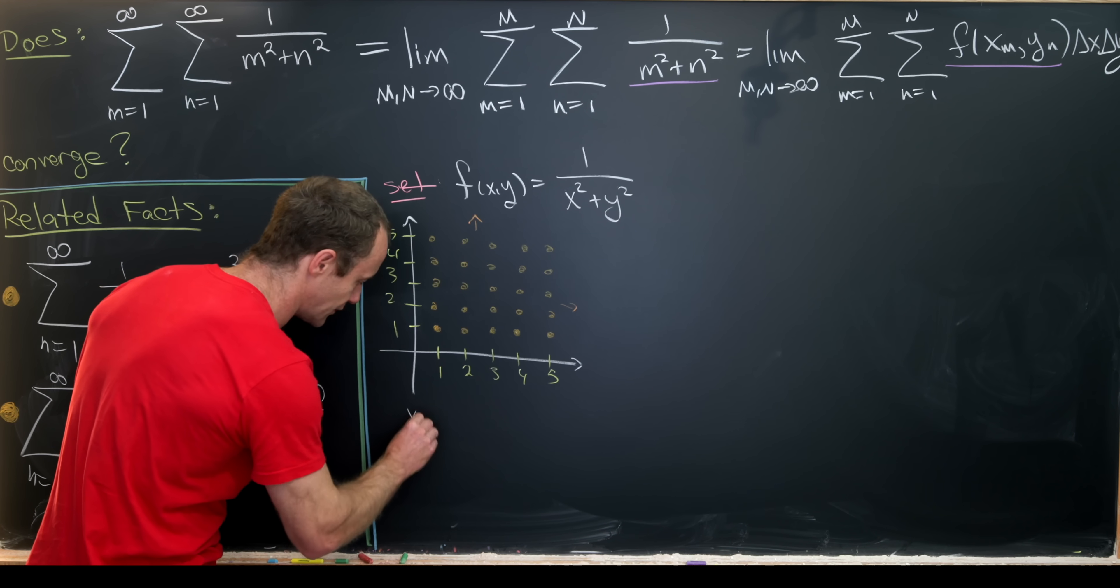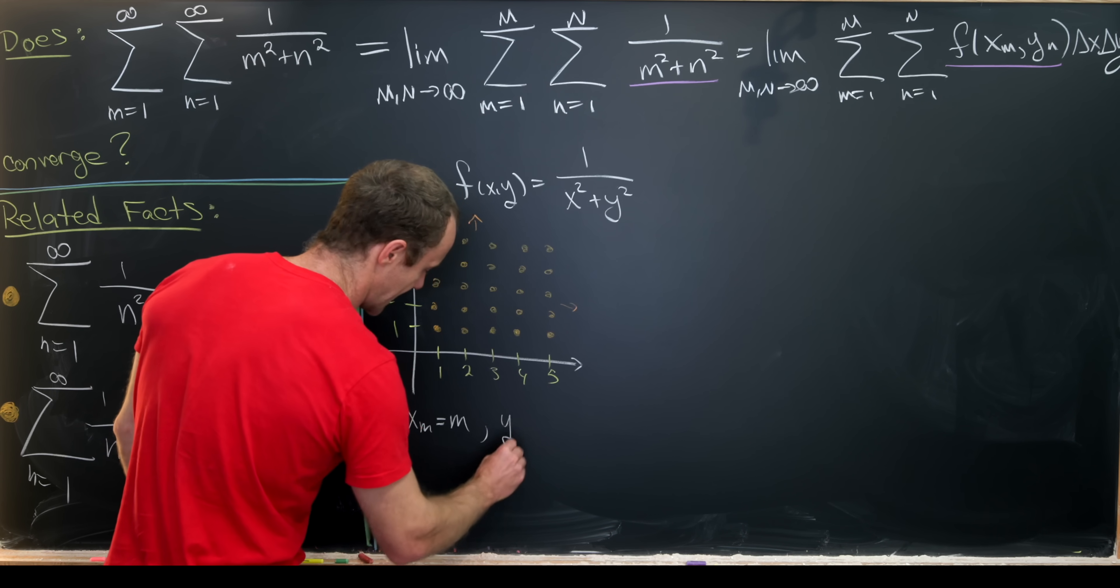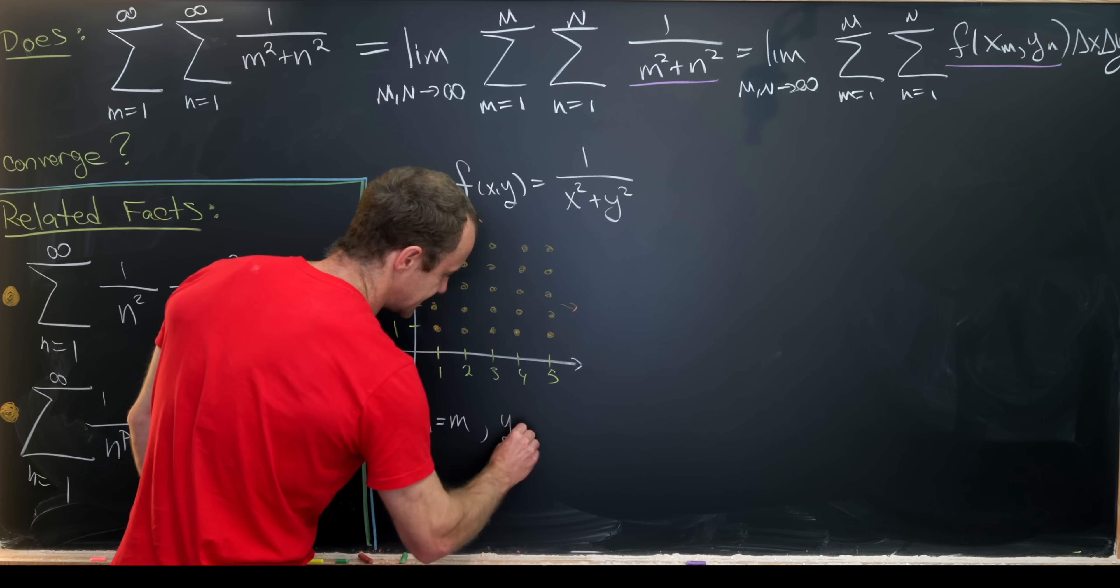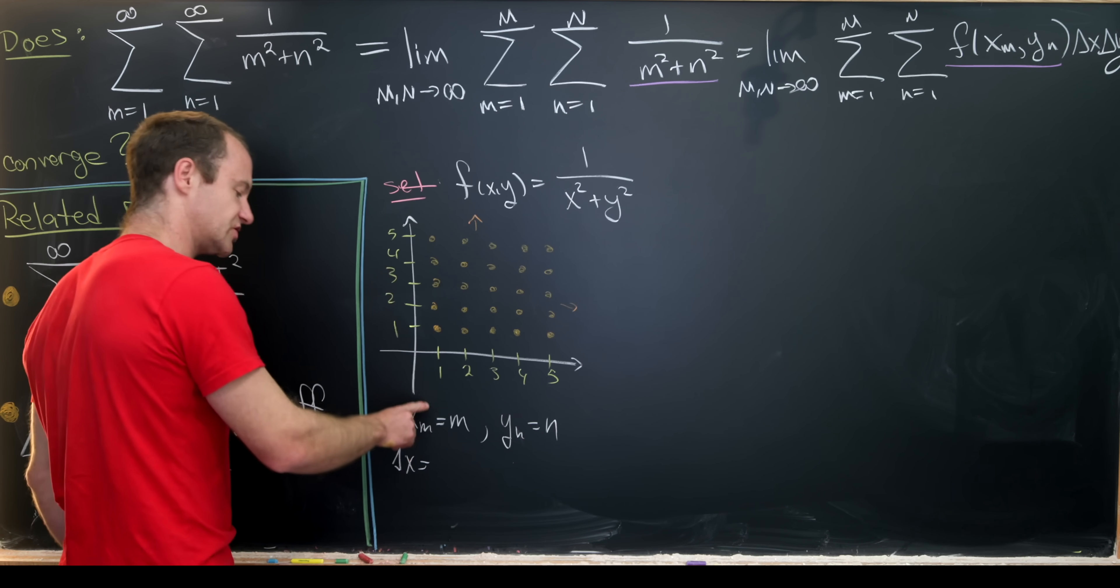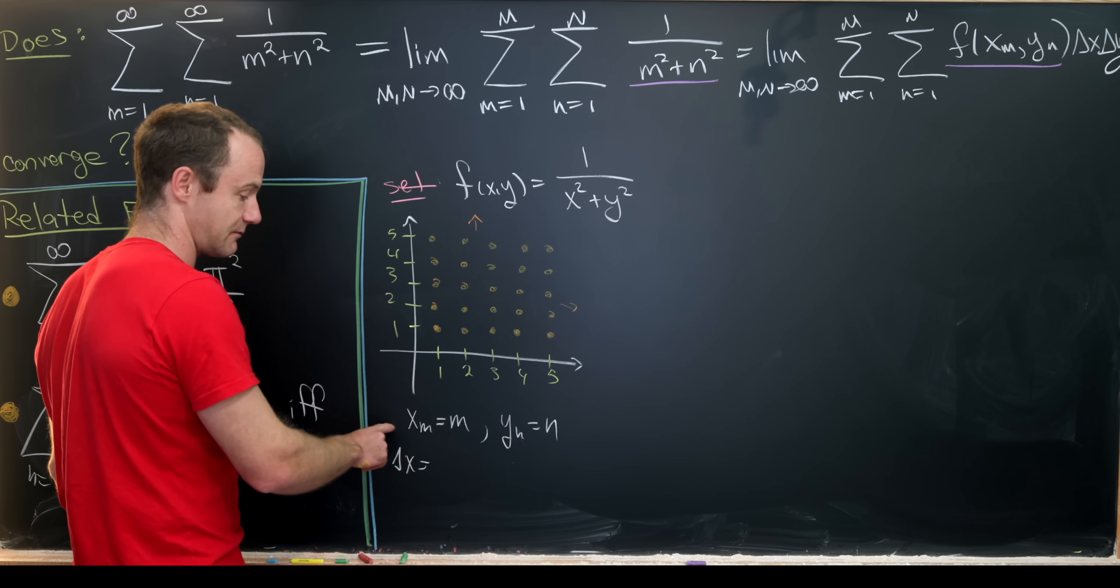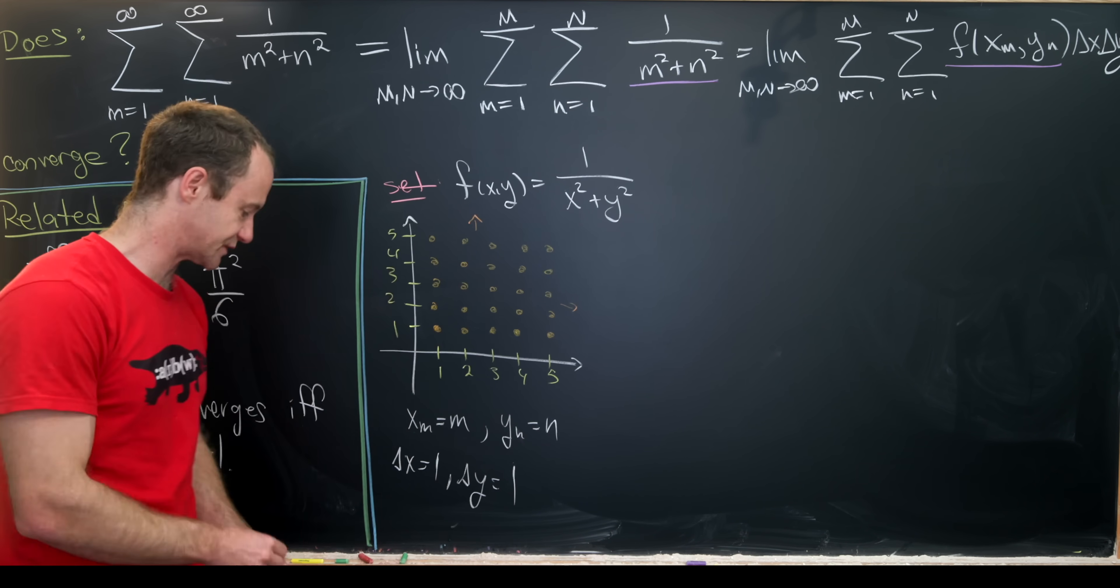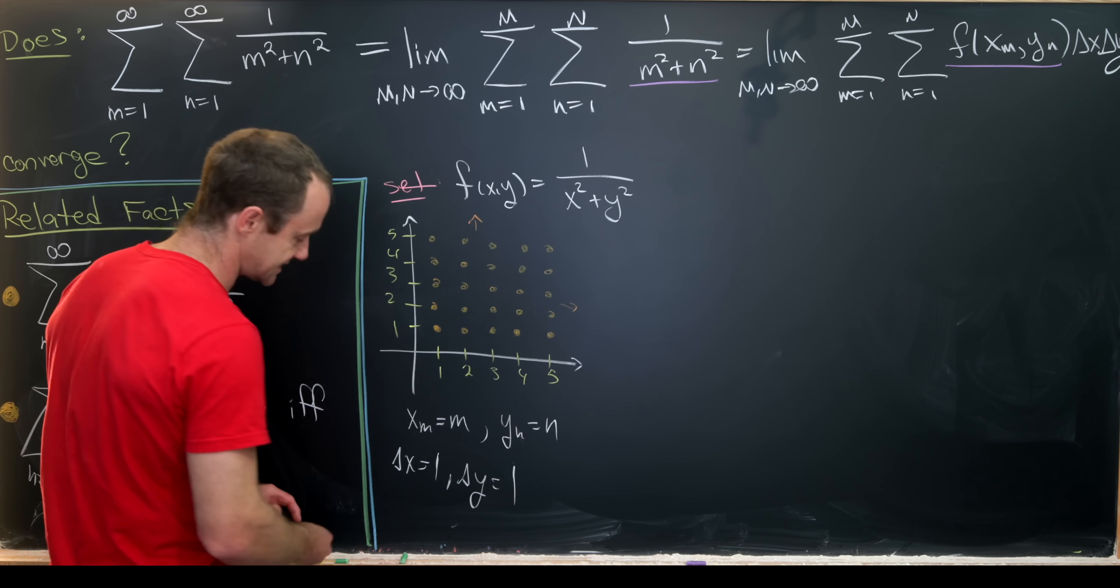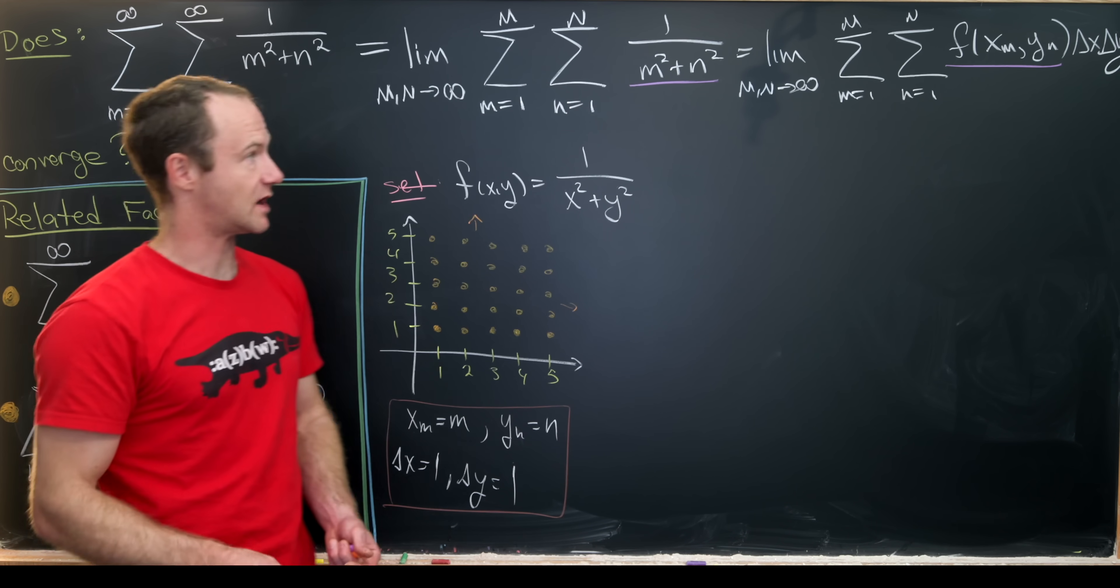So just to fill all of this in, we have x sub m is equal to the number m, and then y sub n is equal to the number n, and that makes delta x equal to, well generally it's x sub n plus 1 minus x sub n, so that'll just be 1, and delta y will be 1 for the same sort of reason. So we're taking this and envisioning it as a double Riemann sum.